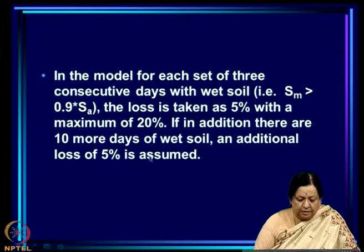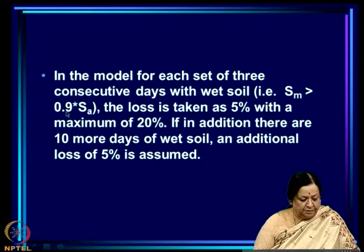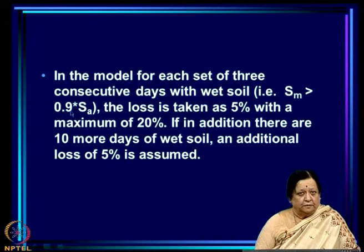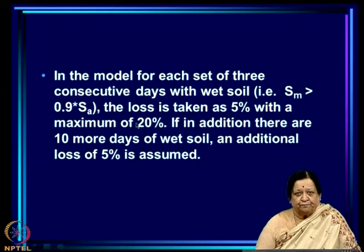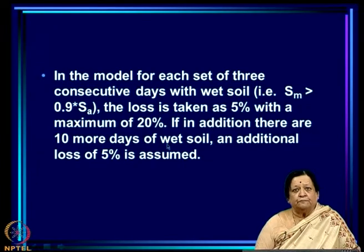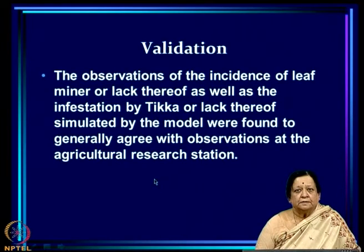Wet spells between 75 and 110 days after sowing are taken to trigger tikka, root rot, and collar rot together. For each set of three consecutive days with very wet soil — soil moisture greater than 90 percent of the maximum available — the loss is taken as 5 percent, with an upper limit of 20 percent. If in addition there are ten more days of wet soil, an additional loss of 5 percent is applied.